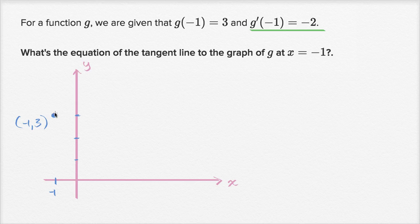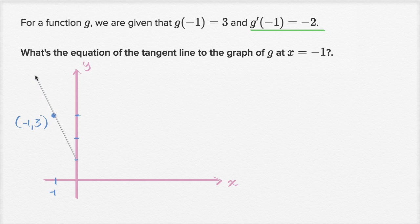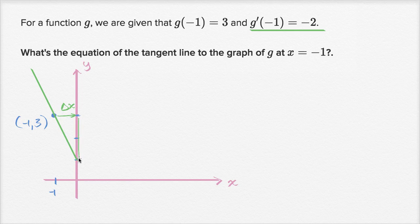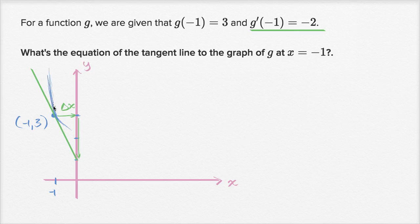I can use that information to actually draw the tangent line. A slope of negative two is going to look something like that. As we can see, if we move positive one in the x direction, we go down two in the y direction — that has a slope of negative two. Our function g might look something like this, where that is the tangent line.